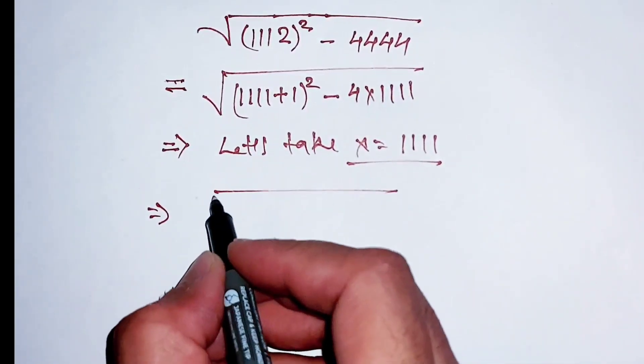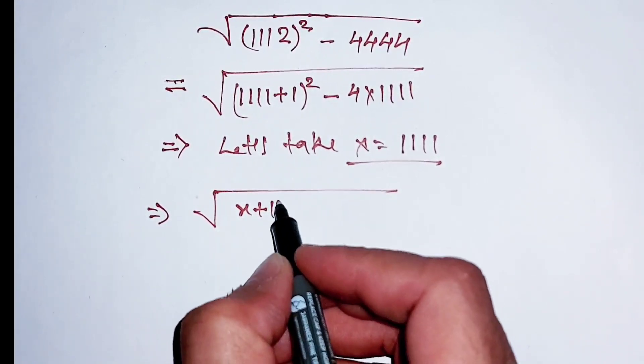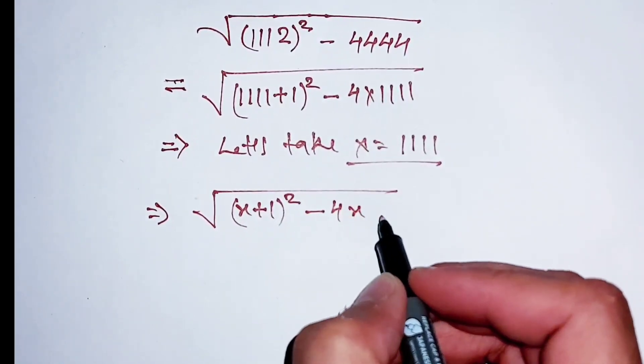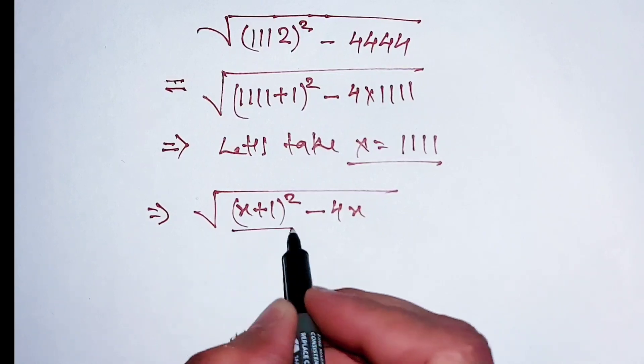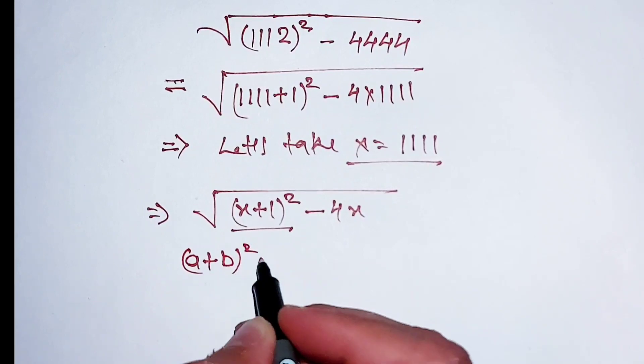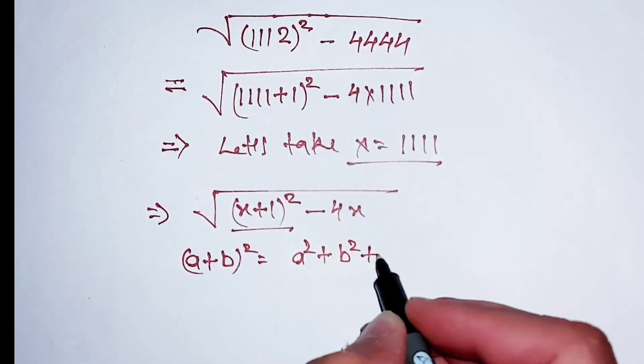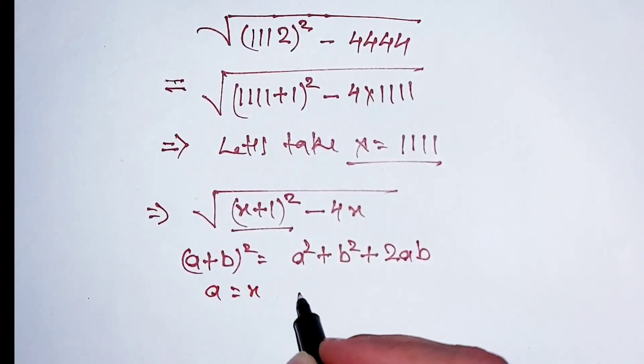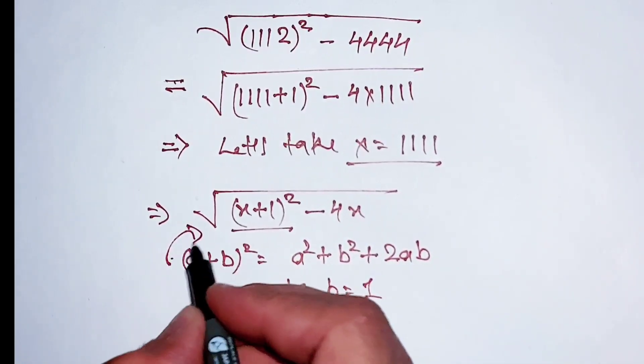What we will get is the square root of x plus 1 squared minus 4 times x. Now we will apply the algebraic formula: a plus b squared is equal to a squared plus b squared plus 2ab. Here a equals x and b equals 1.